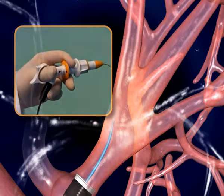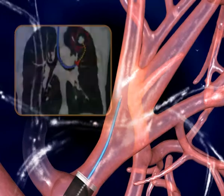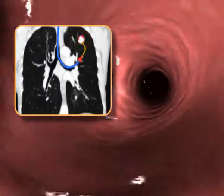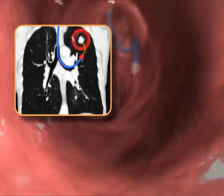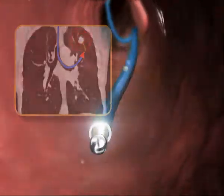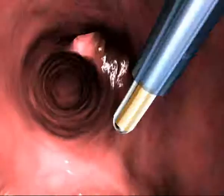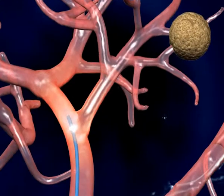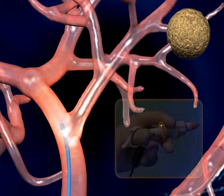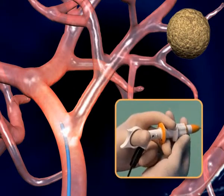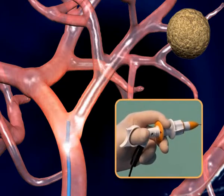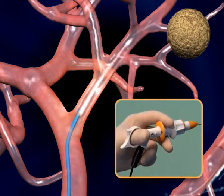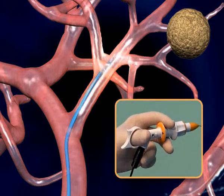The location and steering directions are performed according to the sensor's position on the CT roadmap relative to the target, which was previously registered to the patient's lung. When reaching another airway bifurcation, the catheters are again pushed forward and steered by manipulating the handle.